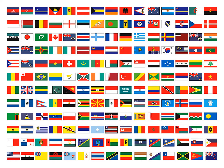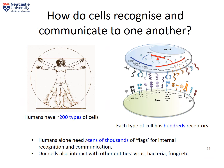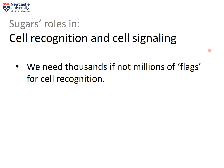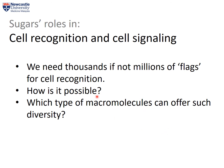Think about this: how do we normally recognize different countries? We recognize them by looking at their flags — with just a few colors and different shapes and patterns you can represent all nations on earth. Coming back to cells, how do cells recognize and communicate with each other? Humans have around 200 types of cells and each cell has around 100 types of receptors. So if each receptor is a country, we need more than tens of thousands of flags for internal recognition and communication, and our cells also communicate with foreign bodies such as viruses, bacteria, and fungi, increasing the need further to potentially millions of flags.